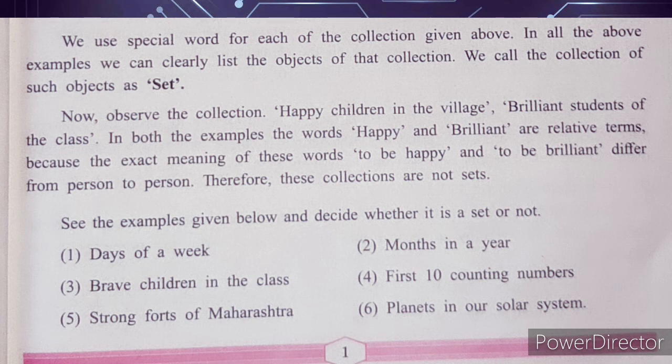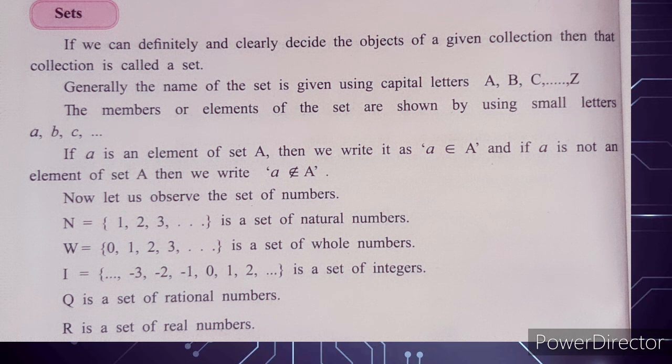Some more examples are given - for example, 'happy children in the village' or 'brilliant students of the class.' But words like happy or brilliant can change from person to person, so this collection is not a set. A proper definition: if we can definitely and clearly decide the objects of a given collection, then that collection is called a set.